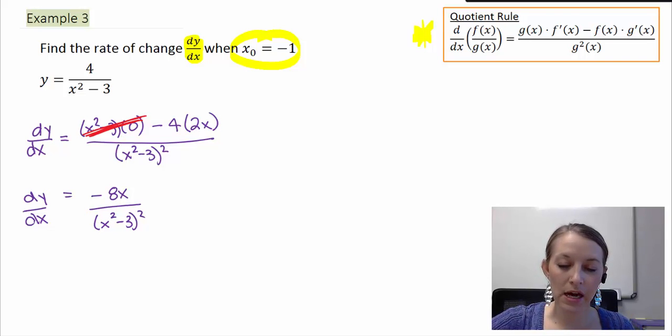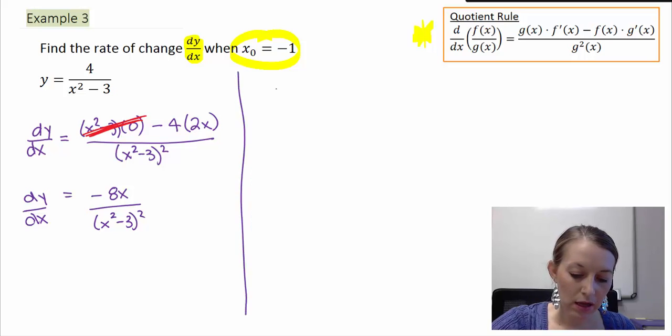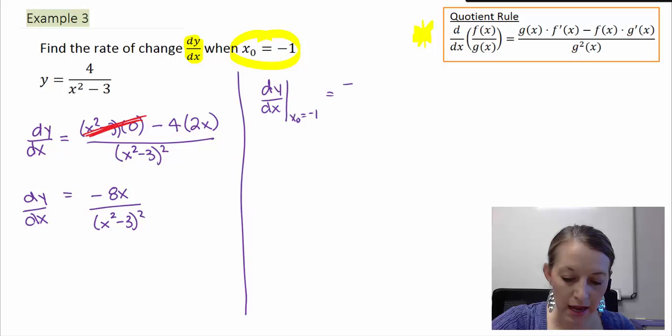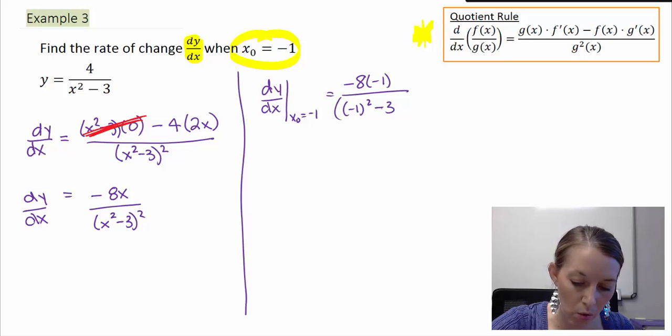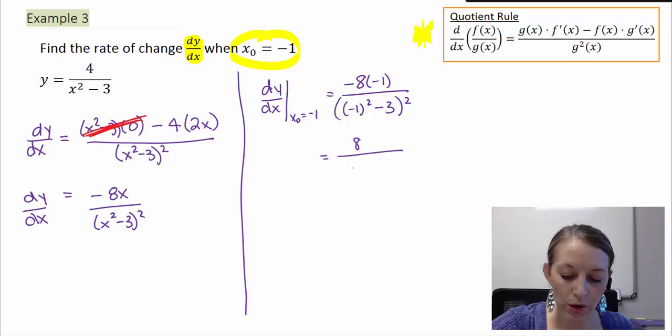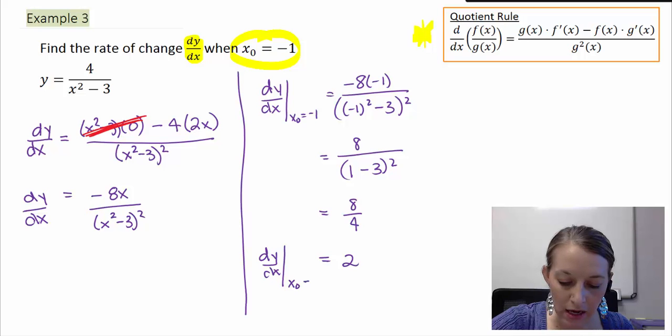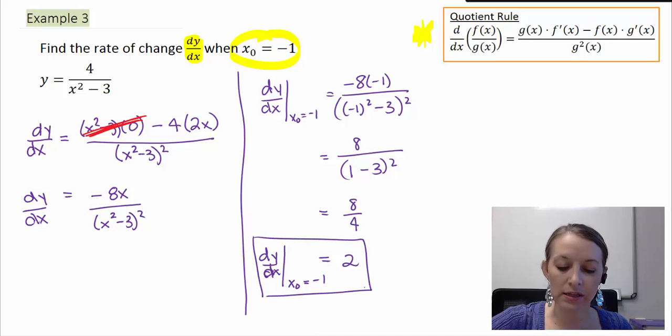Okay, now we want the rate of change when x0 is equal to negative 1. So we need to substitute in negative 1. The notation that we use is dy dx evaluated when x0 is equal to negative 1. So that gives me negative 8 times negative 1, all over a negative 1 squared minus 3 quantity squared. On the top, negative 8 times negative 1 gives me positive 8. On the bottom, negative 1 squared gives me positive 1 minus 3. And so that gives me a negative 2. And so when we square it, it gives us 4. And so our derivative dy dx evaluated when x0 is equal to negative 1 is equivalent to 2. So this is our rate of change when x0 is equal to negative 1.